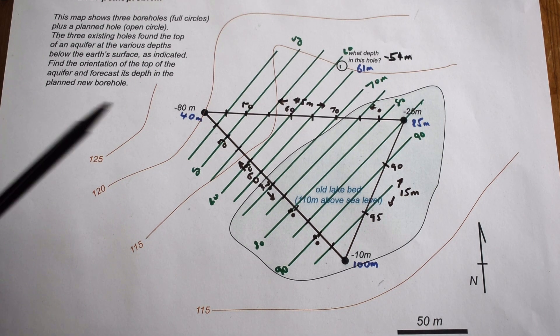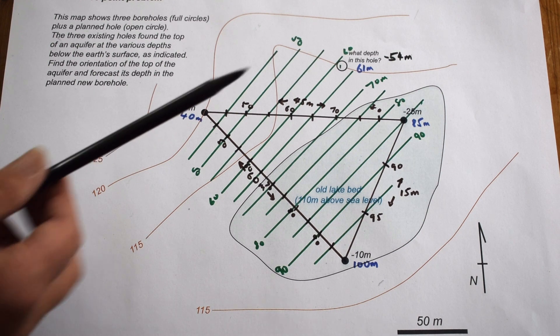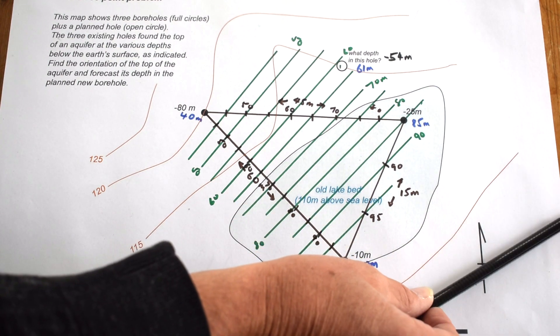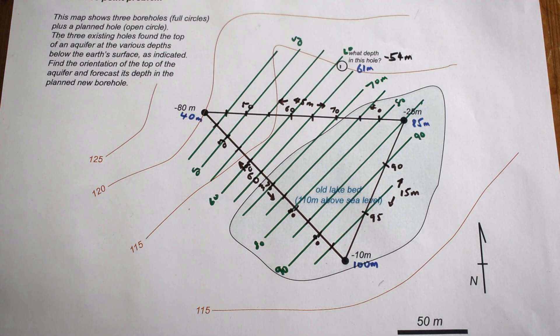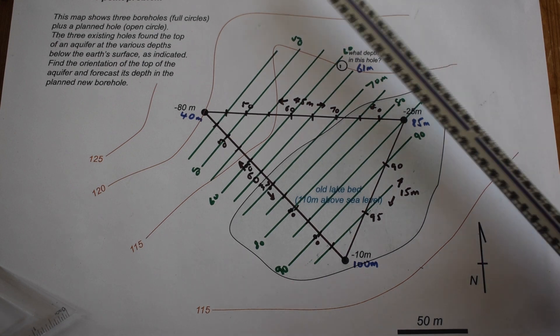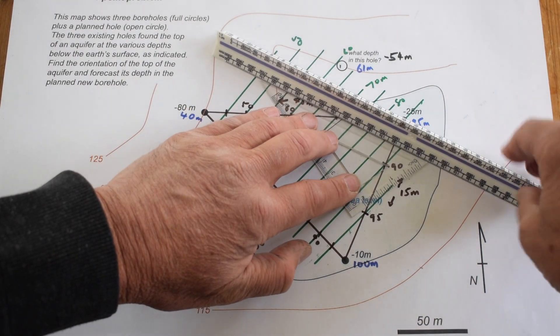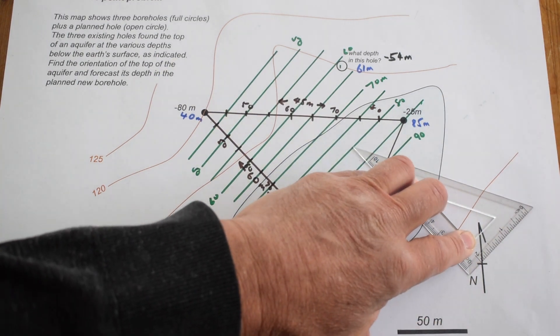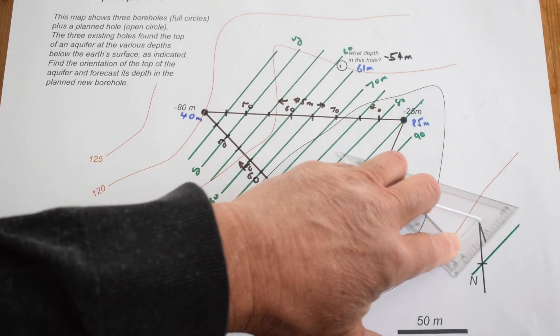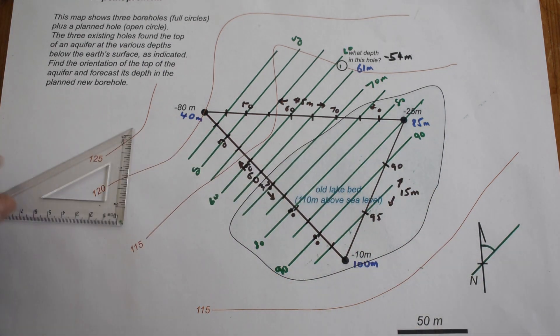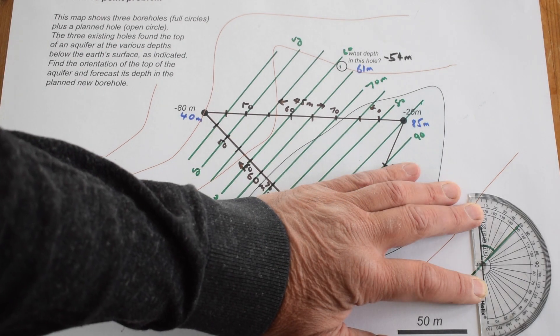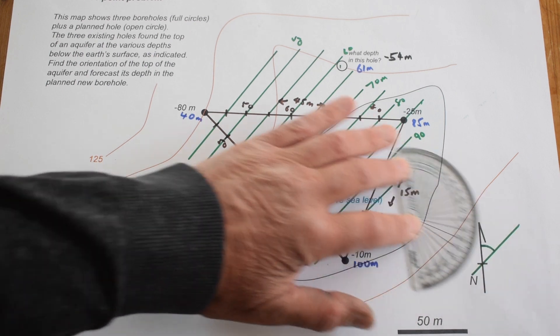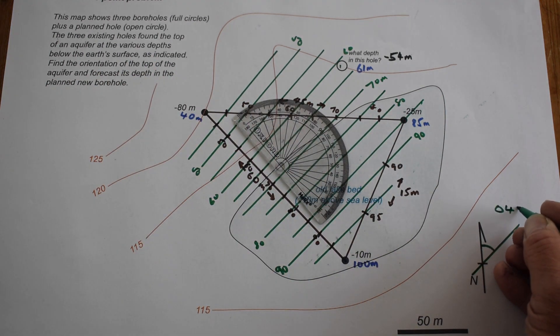Now let's calculate the strike and dip of the top of our aquifer. The strike is going to be the trend of the structure contours relative to north, which we can simply measure as a bearing around here. Let's project those contours across using a simple set square and a slide. That is the strike there, which I'll measure with a protractor. That's a bearing from north of 049.